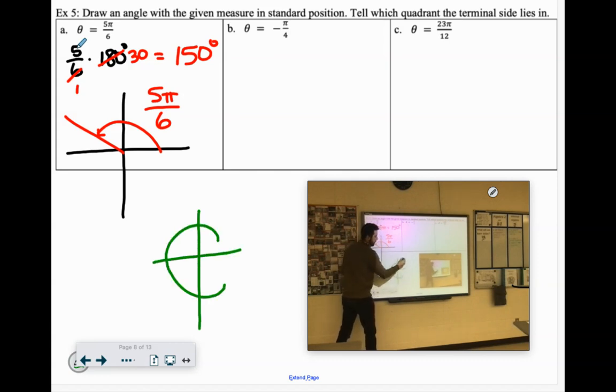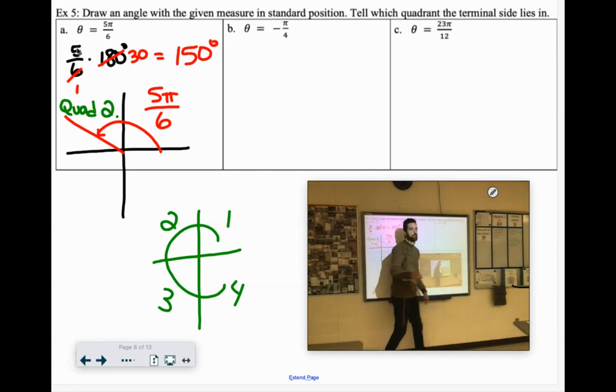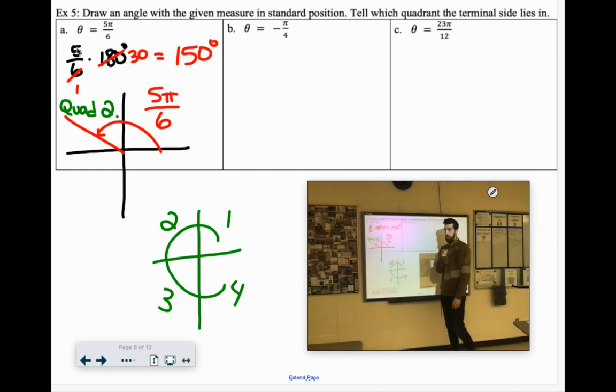It goes quadrant 1, 2, 3, 4. So this would lie in quadrant 2. And again, this kind of stuff comes back into play in 10.3. This is why we're learning.